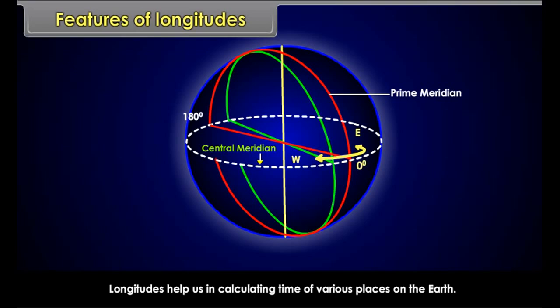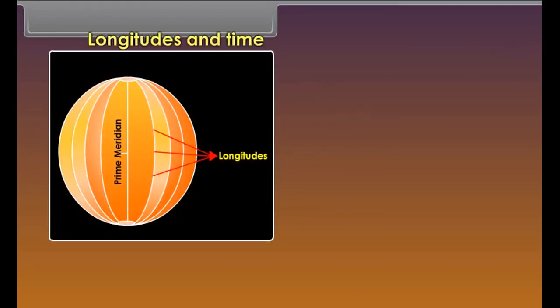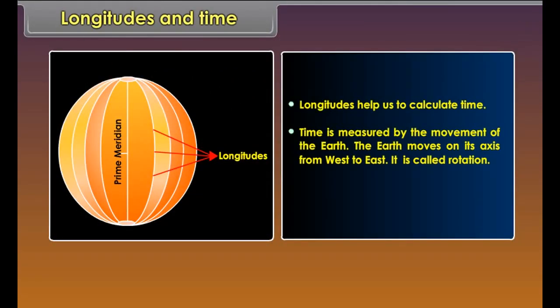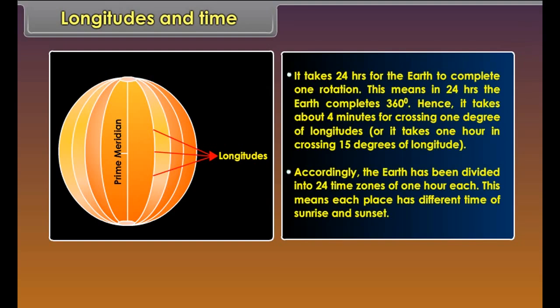Longitudes are semi-circles and there are 360 in all — 180 in the east and 180 in the west of the prime meridian. 180 degrees east and 180 degrees west is one longitude. Longitudes help us in calculating the time of various places on the earth. The distance between longitudes is maximum at the equator and it goes on decreasing towards the poles.